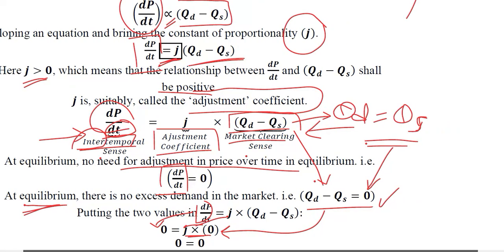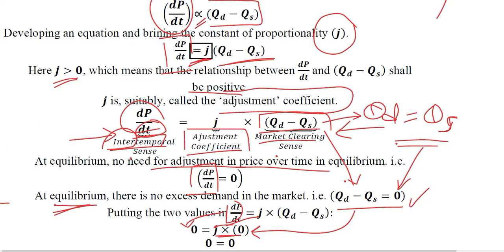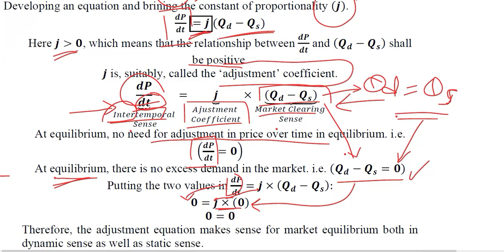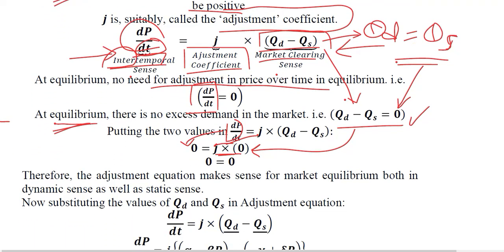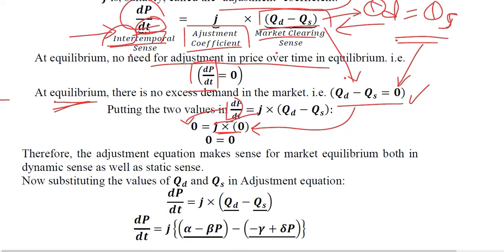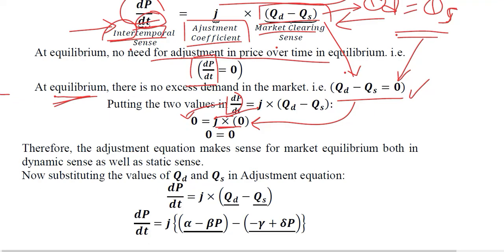We have explained the case where there are no adjustments — where there is equilibrium from the beginning — which is a rare case, but we must consider it. The other two possibilities, which require adjustments, can be understood with the help of the following simplification.